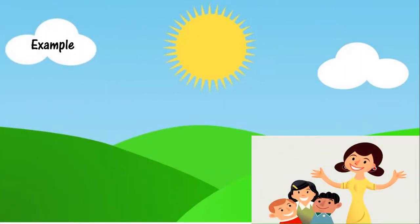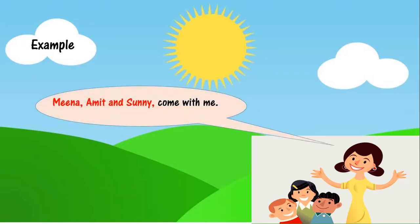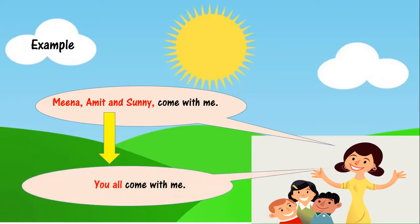Now in this picture, the teacher is talking to three children. Teacher teen bacchon se baat kar rahi hai aur kya bol rahi hai? Meena, Amit and Sunny come with me. Yahaan Meena, Amit and Sunny names hai, and we can replace these names with the word you all. And the teacher can say you all come with me.